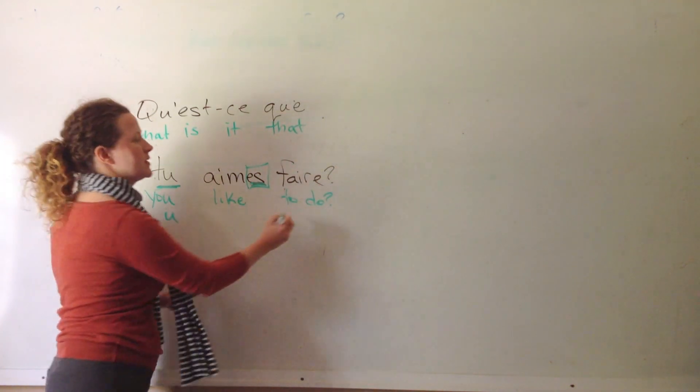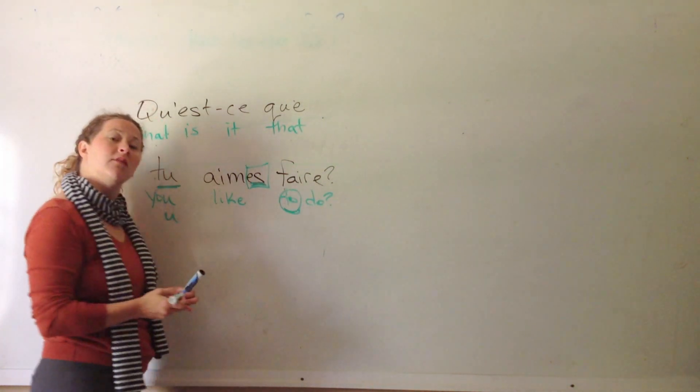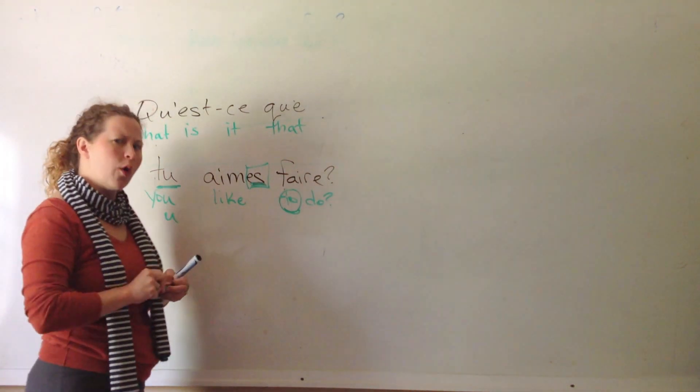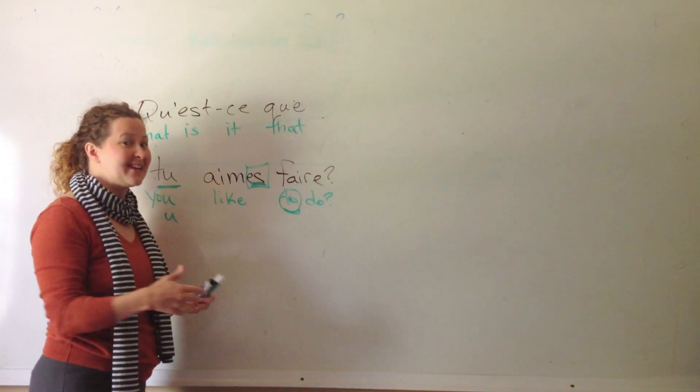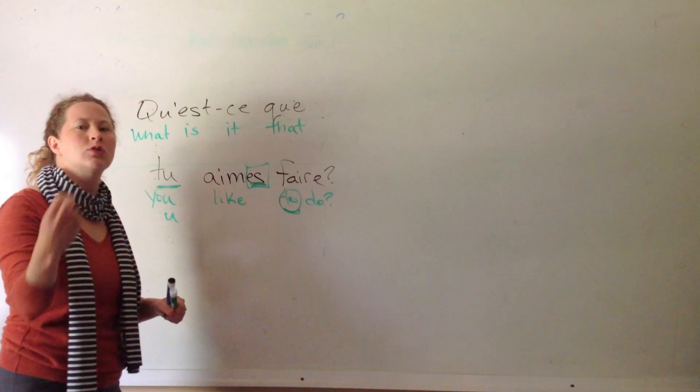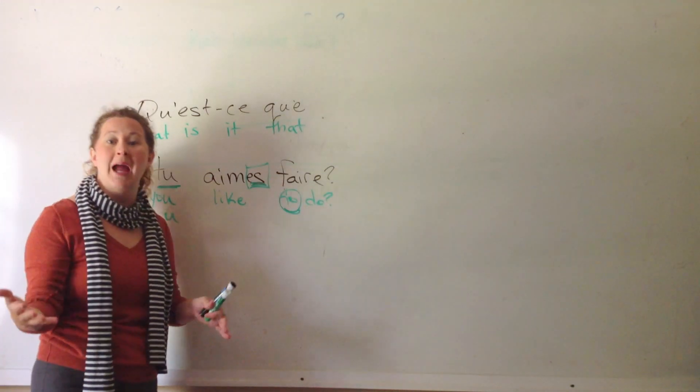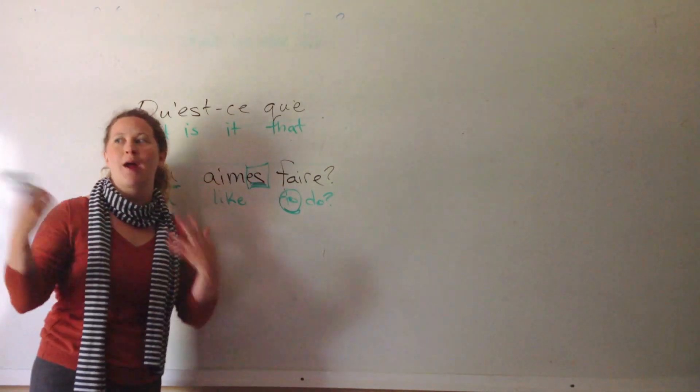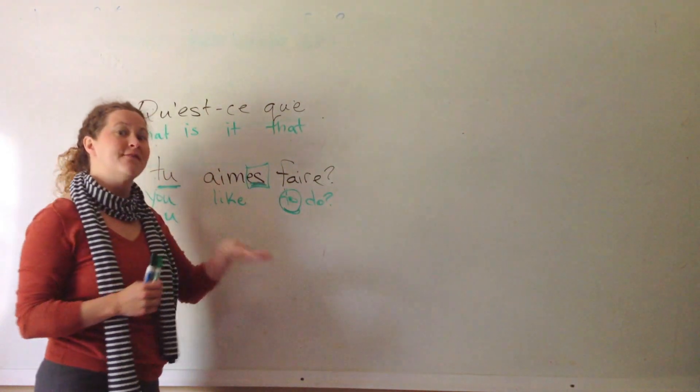But on the next verb, you see to in front of it. And anytime you have to on the front of a verb, it means it's an infinitive or unconjugated. So, to do, to shop, to camp, to hike, to enjoy a beautiful day. These are infinitives.